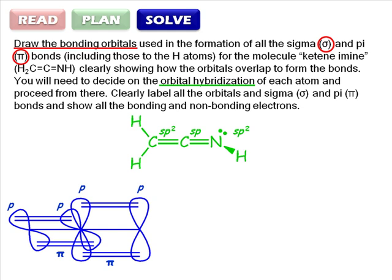Having dealt with the pi bonding, let's look at the sigma bonding. First of all, draw the framework. Then, add the three sp2 orbitals, arranged in a trigonal planar array on the first carbon.